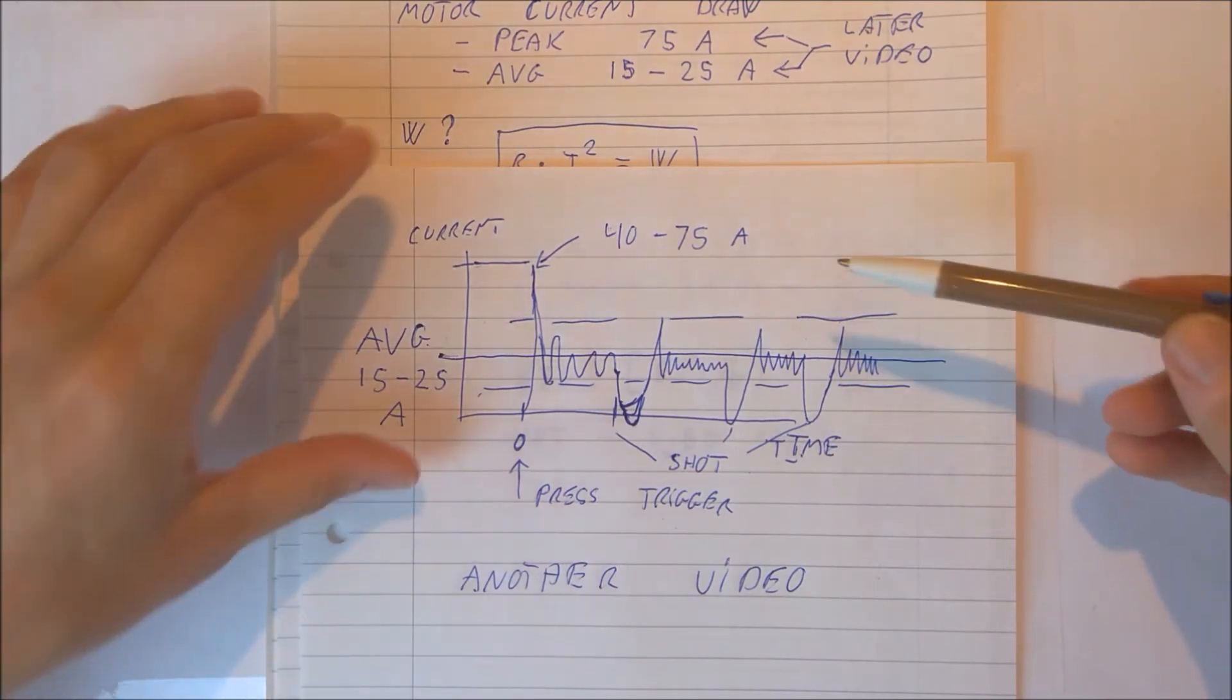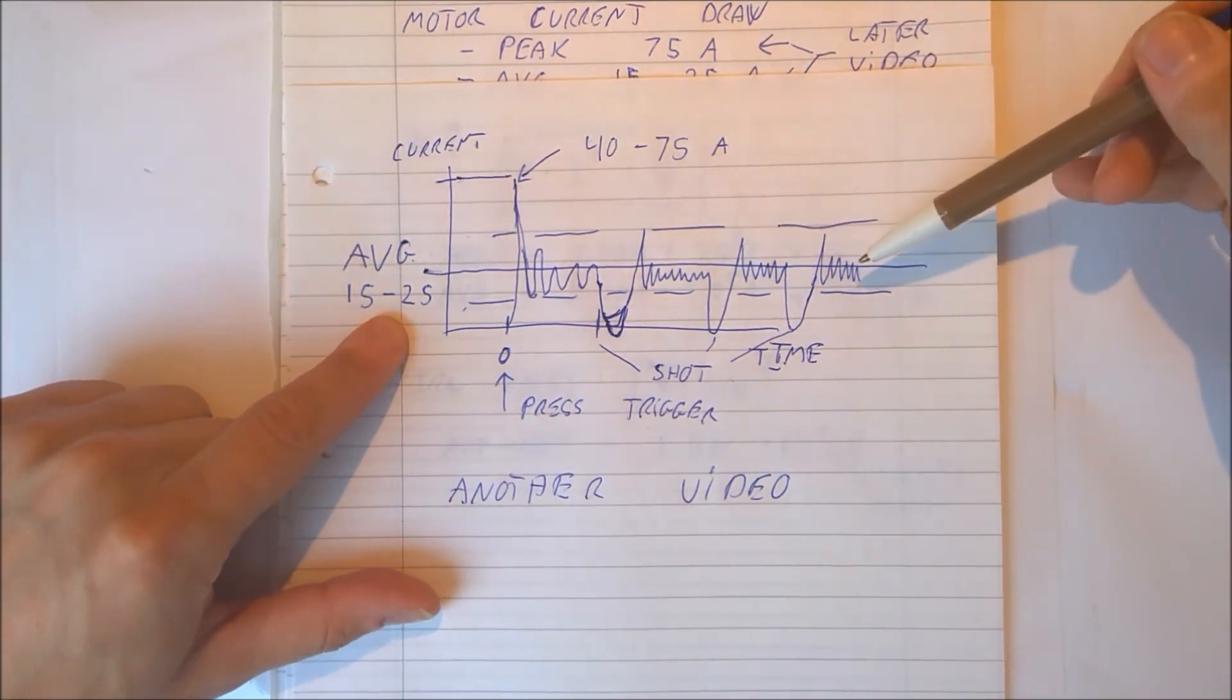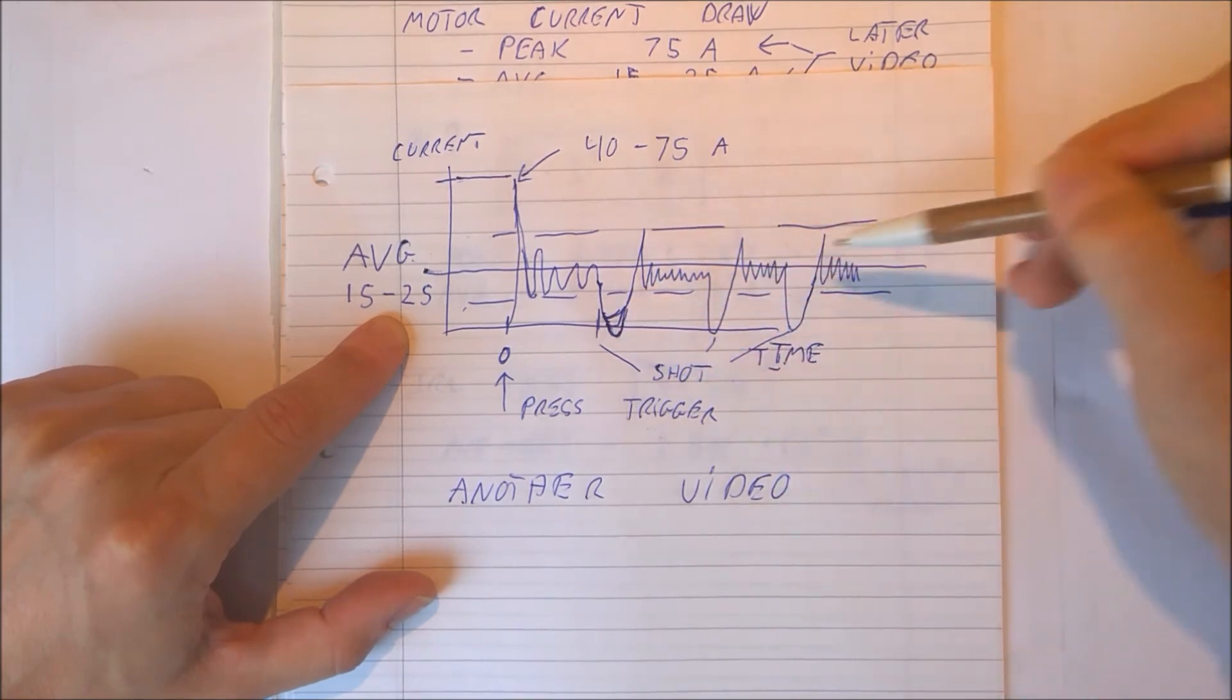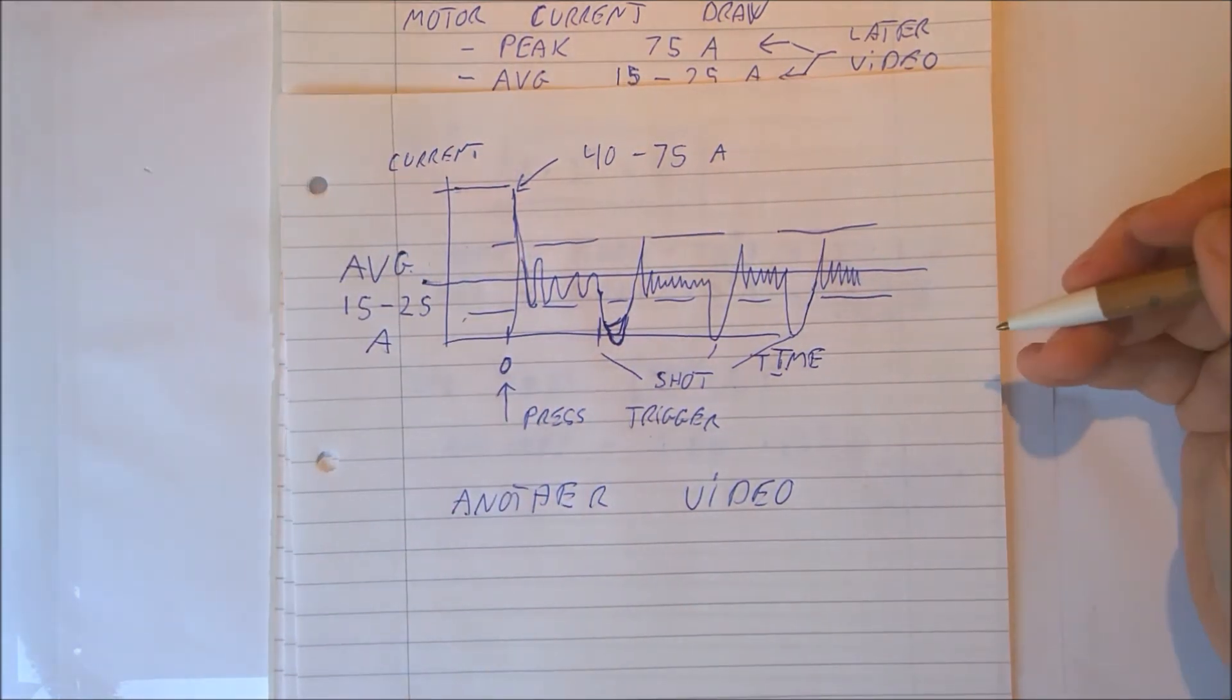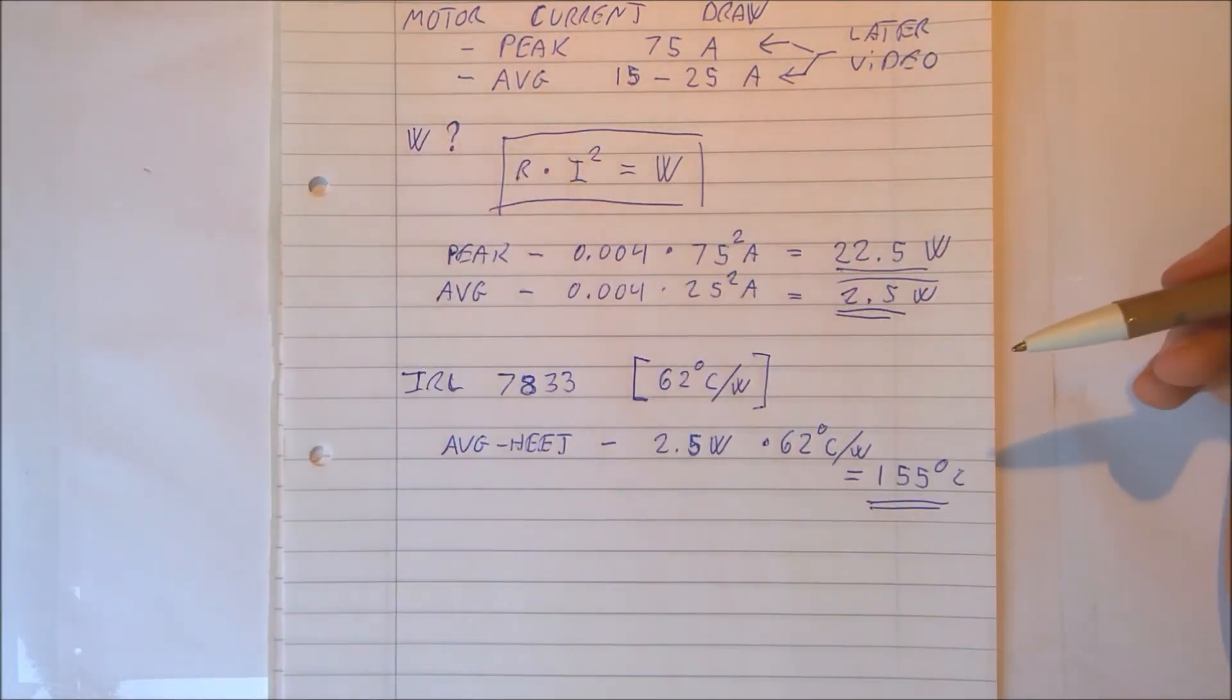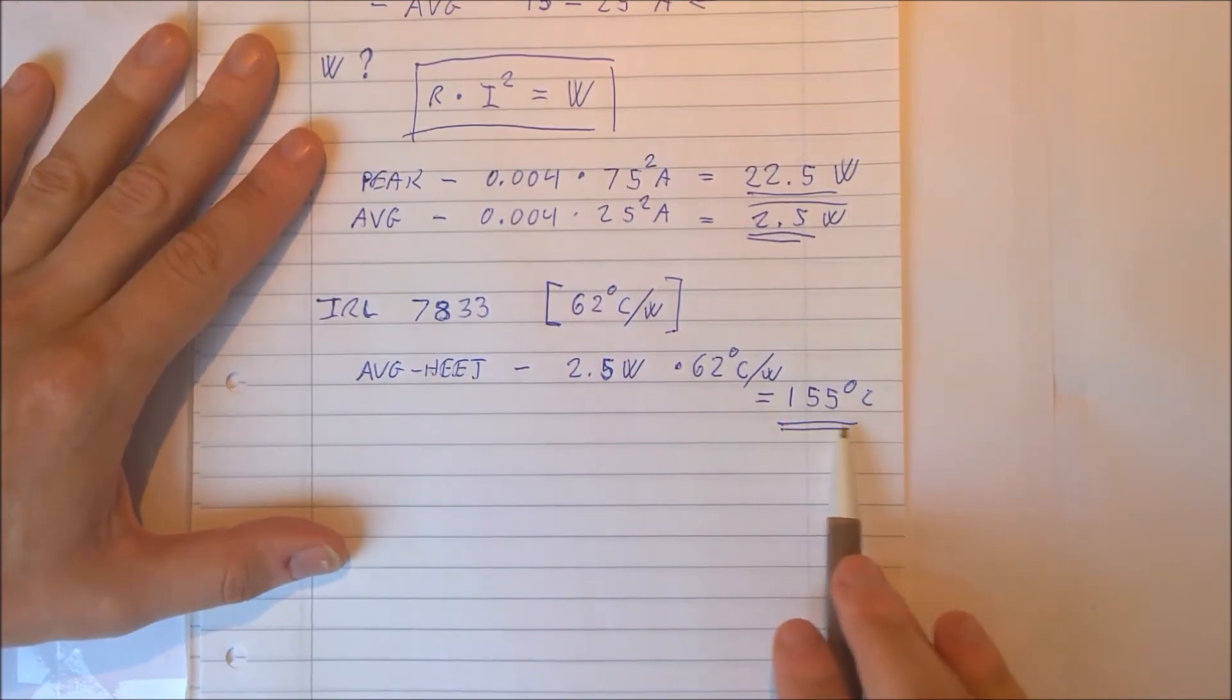As I just showed you on my curve, in average it will dissipate this much. But we also have periods where we have very low values. And each time you shoot, you will have a cooldown period where you are not touching the trigger. If you continue shooting, the MOSFET will get very, very hot.